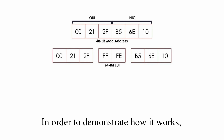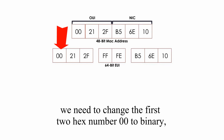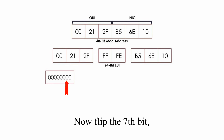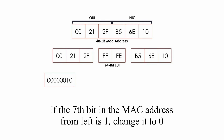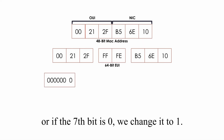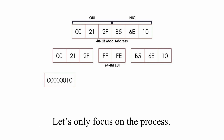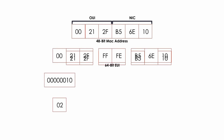In order to demonstrate how it works, we need to change the first two hex numbers 00 to binary, which is 8 zeros. Now flip the 7th bit, which means if the 7th bit in the MAC address from the left is 1, we change it to 0. Or if the 7th bit is 0, we change it to 1. Please do not worry about the reason why we need to flip the 7th bit right now, and let's only focus on the process. Now we get the interface ID.